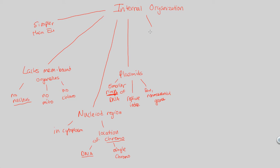Prokaryotes also have cytoplasm within their internal organization — real estate within the cell. The cell is not just empty. There's an actual area containing cytoplasm, which will contain ribosomes. Don't confuse cytoplasm with cytosol — cytosol is just the fluid-like component within cytoplasm, while cytoplasm is the entire region on the inside of a cell. That includes ribosomes and storage granules. These are simple things within the cytoplasm, not necessarily organelles. Ribosomes are just a bunch of protein and enzymes combined together. Enzymes also float around freely because there's no mitochondria and no chloroplast — all the enzymes for cell respiration and photosynthesis just float around in the cytoplasm.